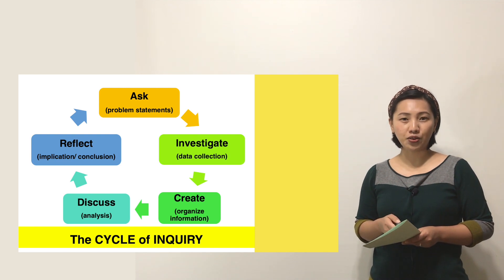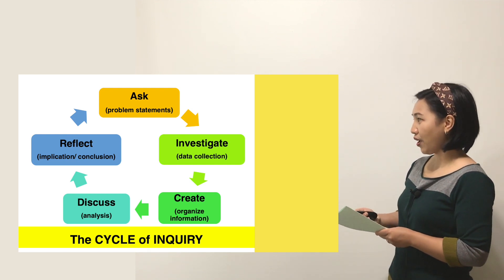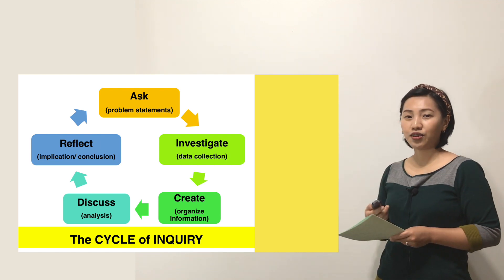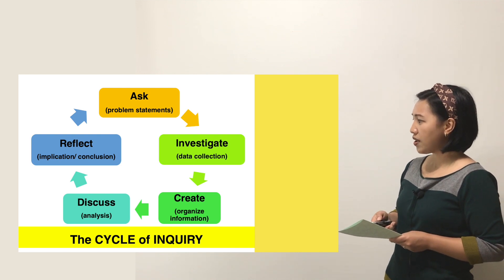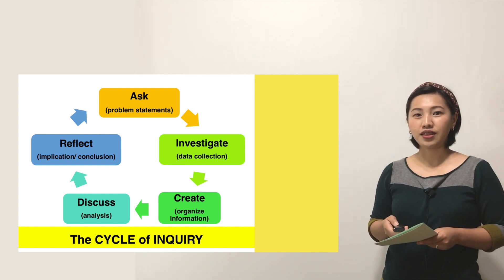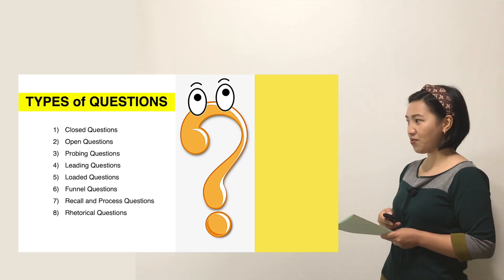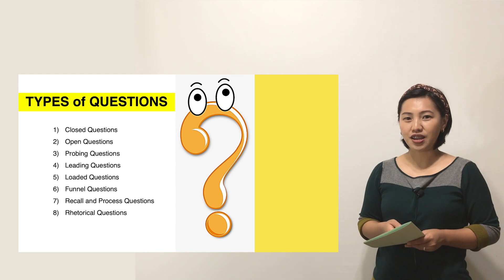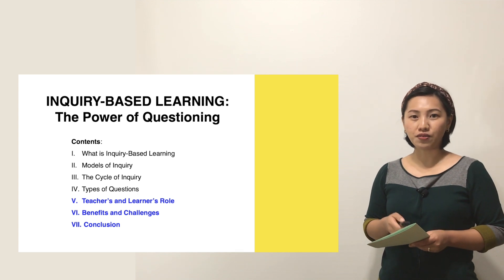Next, we had the cycle of inquiry. The first step is to ask, next is to investigate, third step is to create, fourth is to discuss, and fifth step is to conclude. That's the cycle of inquiry. And the last topic was the eight types of questions. I hope you were able to recall correctly. And on the second part, we will encounter the rest of the topics.